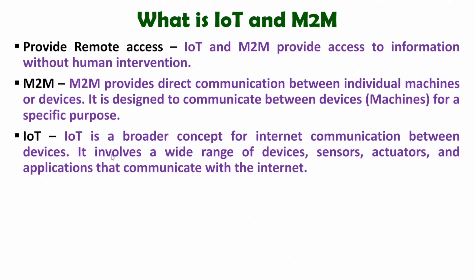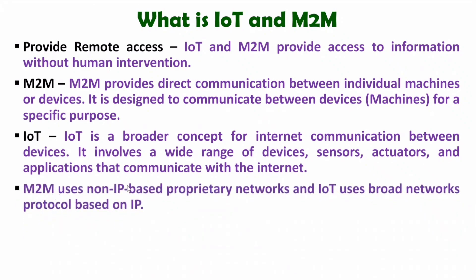IoT involves a wide range of devices, sensors, actuators, and applications that communicate using the internet. In IoT we have a broader network using the internet for communication with many applications, while in M2M the purpose is specific and the network is limited. M2M uses non-IP based proprietary networks, although IP-based communication can exist, while IoT uses broad networks with protocols based on IP.